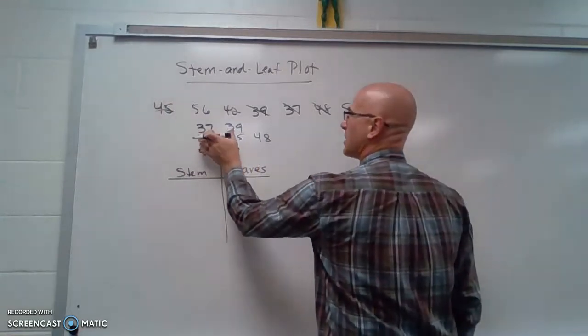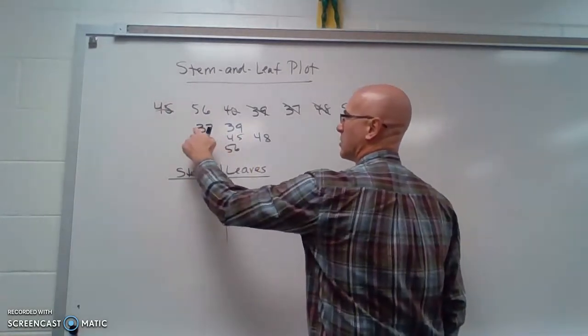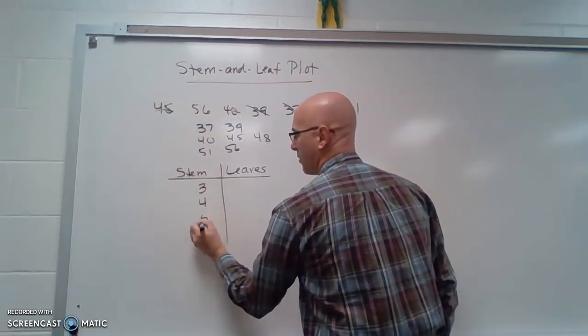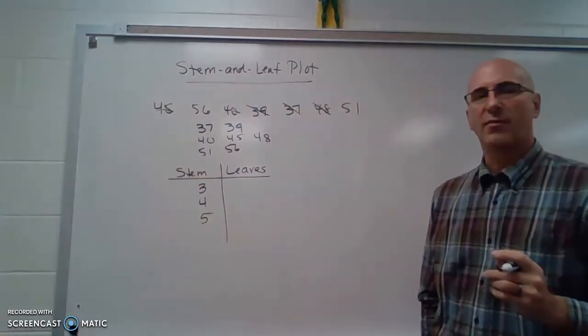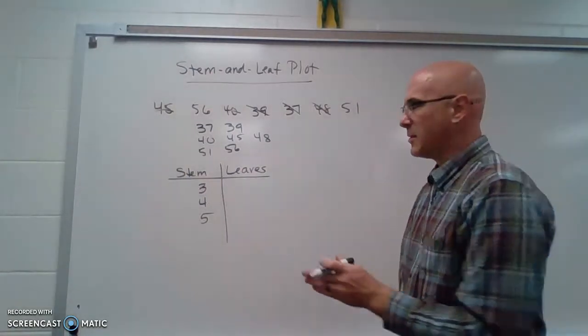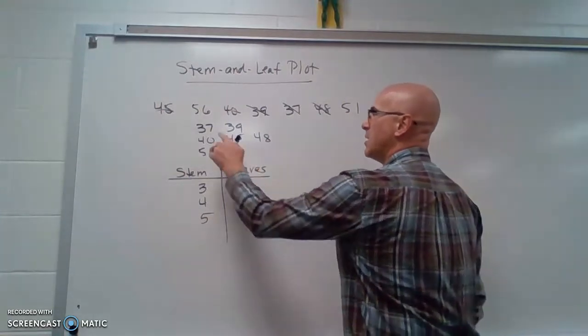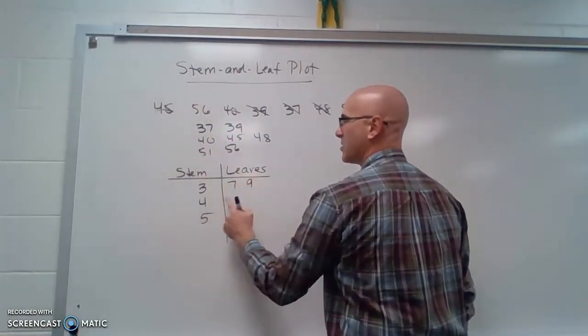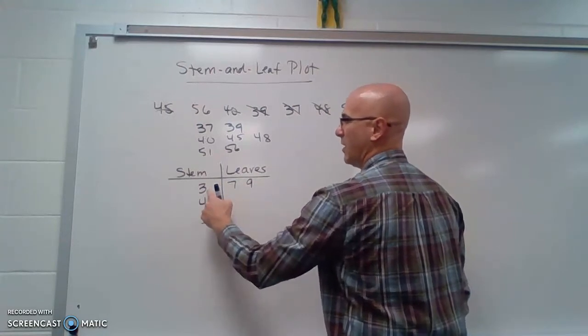So our stem is our bigger place value. So we have 30s, 40s, and 50s. So I'm going to put 3, 4, and 5. Now we're going to put the other place value, in this case our ones place, in our leaves. So we have a 7 and a 9 here. So this represents 37, 39.